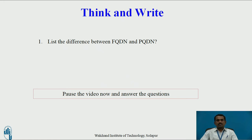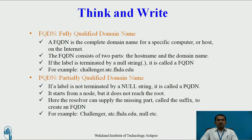Now let us see the answer for the above question. FQDN — fully qualified domain name — is the complete domain name for a specific computer or host on the internet. FQDN consists of two parts: a host name and a domain name. If the label is terminated by a null string, it is called FQDN. For example: challengers.atc.fhda.edu.